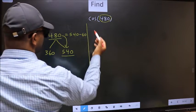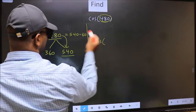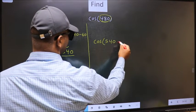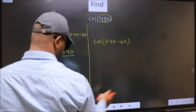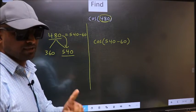So, this will become cos. In place of this, we write 540-60. This is your step 1.